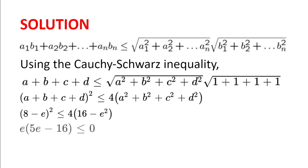We can further rearrange this to get e multiplied by 5e minus 16 is less than or equal to 0, and finally we get 0 is less than or equal to e is less than or equal to 16 fifths. And so the largest value of e is when e equals 16 fifths.